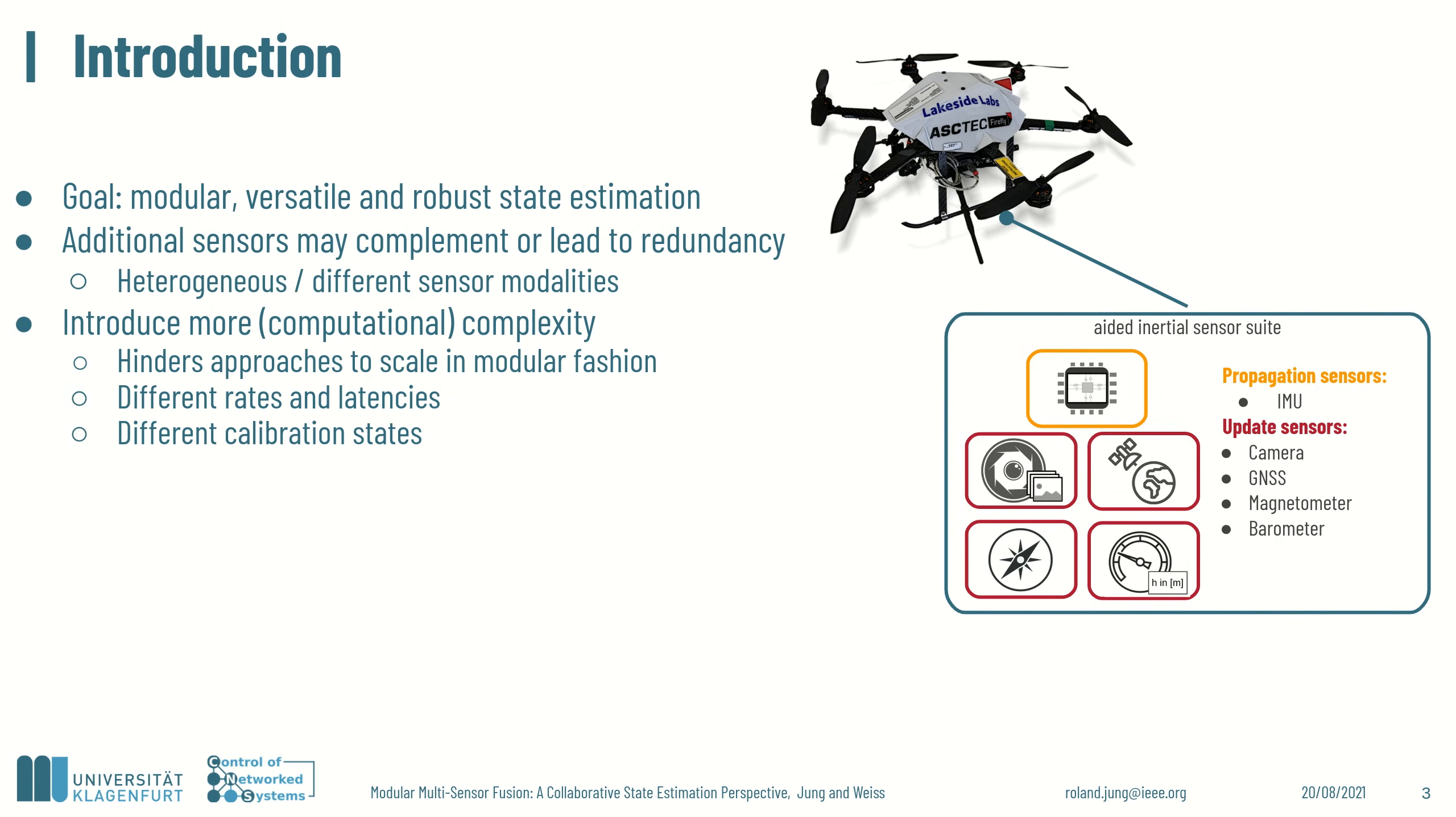Modular and versatile state estimation is a crucial component for autonomous systems to achieve complex tasks. Additional sensors may complement others or may increase the system redundancies in case of sensor failures or sensor outages due to hindered perception. Integrating additional sensors increases both the systems and computational complexity. Typically, sensors provide measurements at different rates, have different latencies between the moment of perception and processing the information and may require different states to be actively estimated, such as measurement biases or the displacement between the rigid body and the sensor.